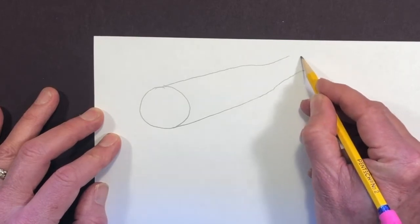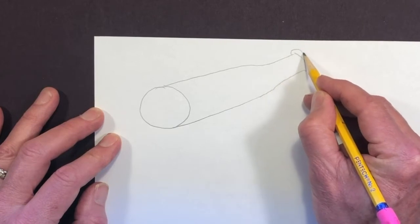But to make it three-dimensional you need to draw the whole baseball bat. Right? Now it starts to look like a baseball bat.